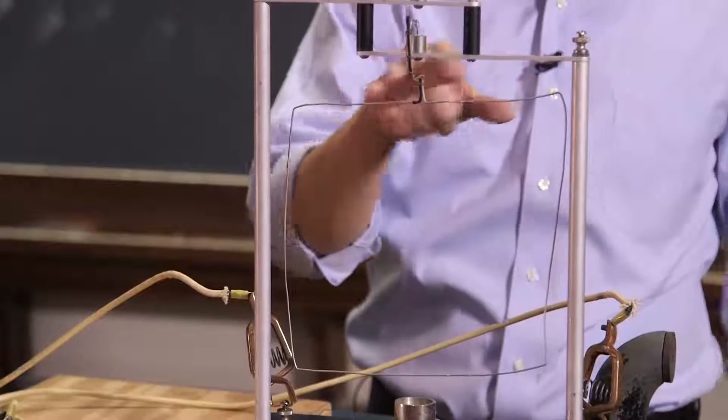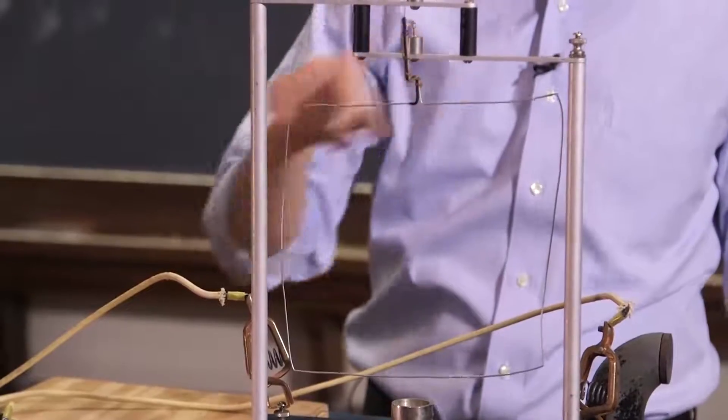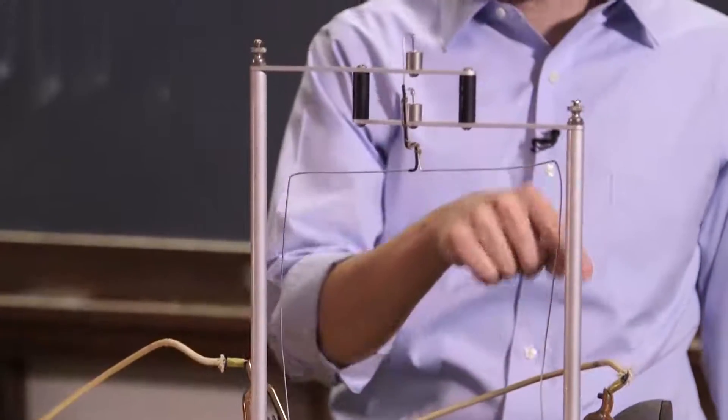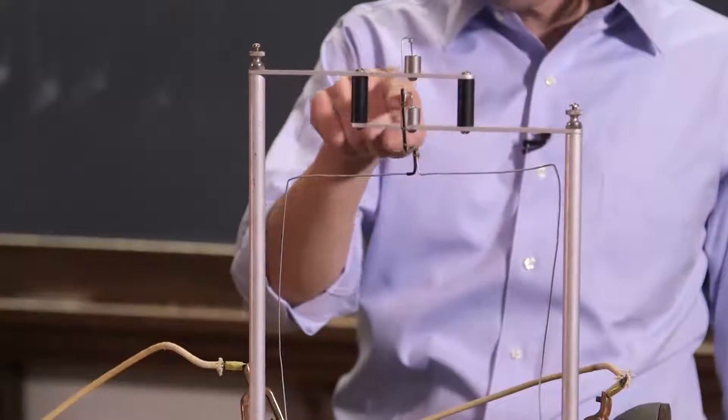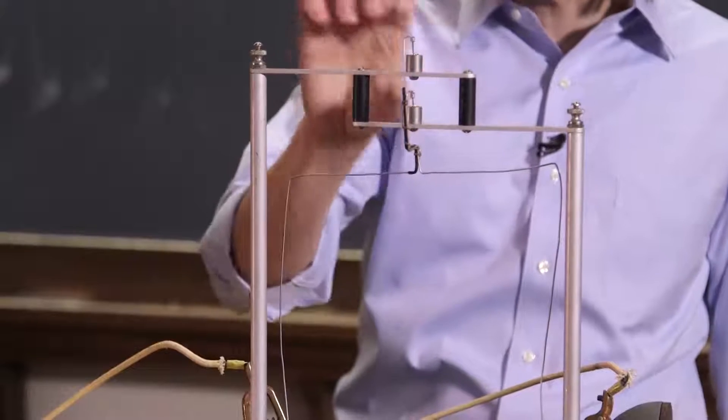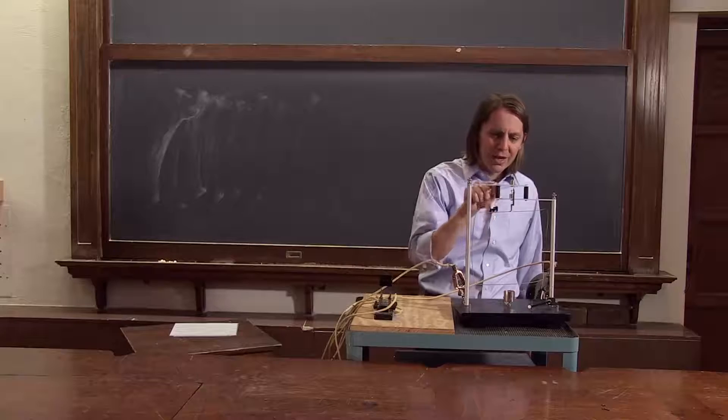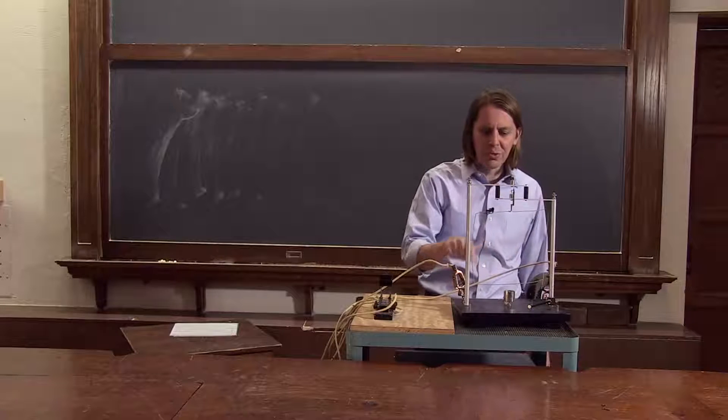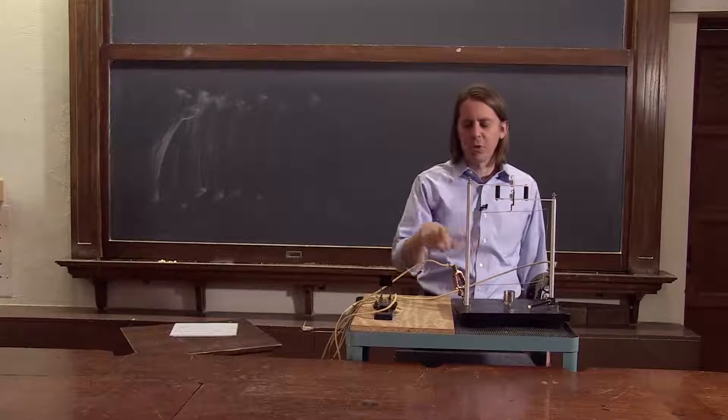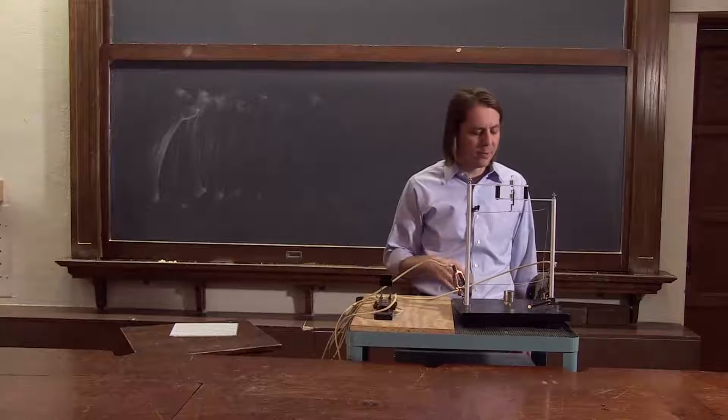So this is a square current loop. If you follow the current flowing from the power supply through this big clip, it goes up through here, out there. There's little cups with mercury in them so that it has electrical contact, but it can still move. Anyway, the current flows eventually through the square, and then back out. So a nice square current loop once I turn it on. There's no current now.